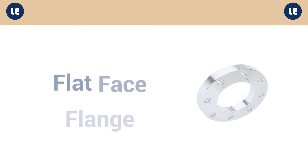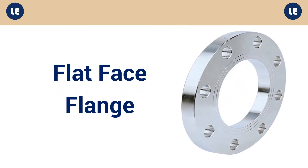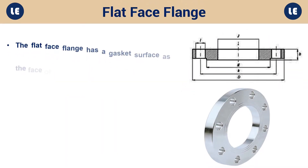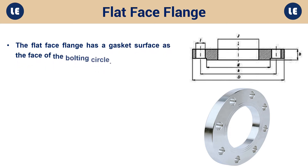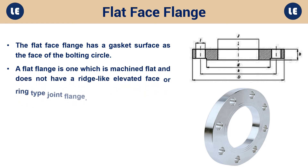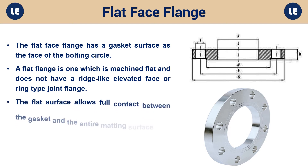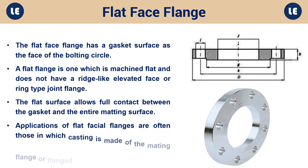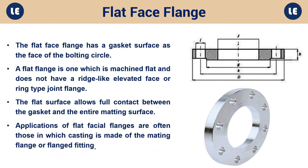Flat face flange: The flat face flange has a gasket surface as the face of the bolting circle. A flat flange is one which is machined flat and does not have a ridge-like elevated face or ring-type joint flange. The flat surface allows full contact between the gasket and the entire mating surface. Applications of flat face flanges are often those in which casting is made of the mating flange or flanged fitting.